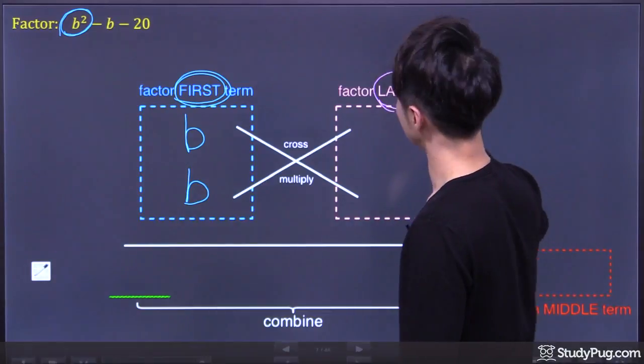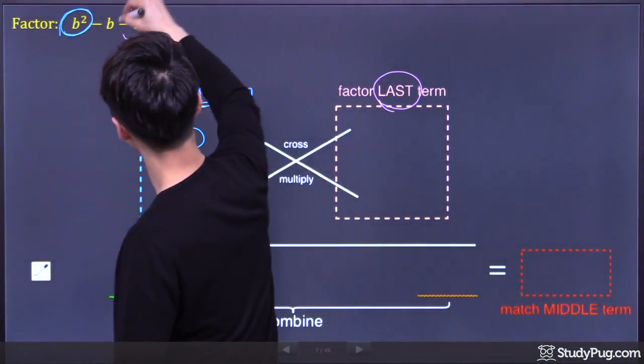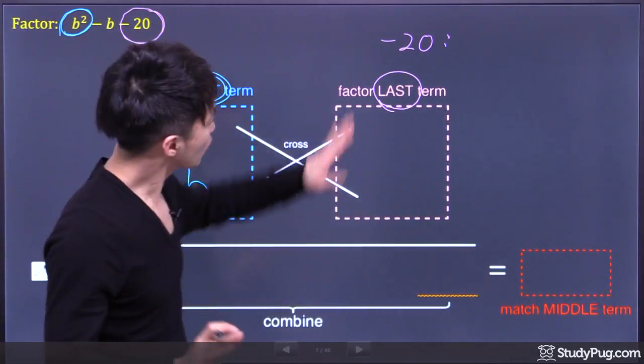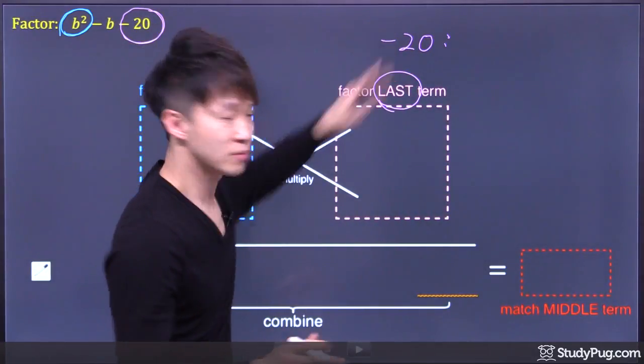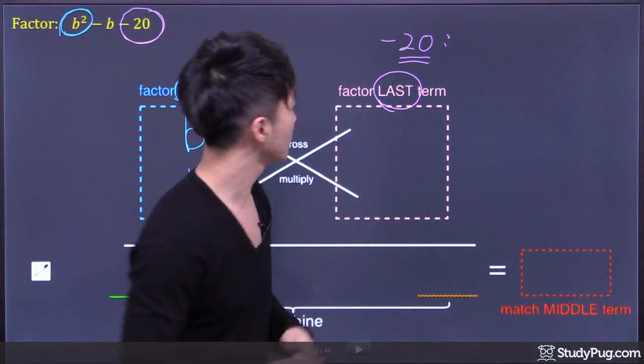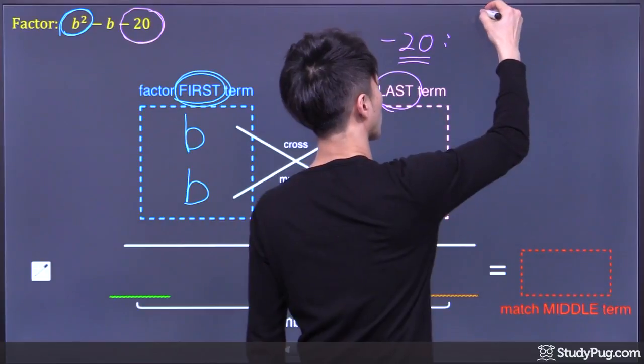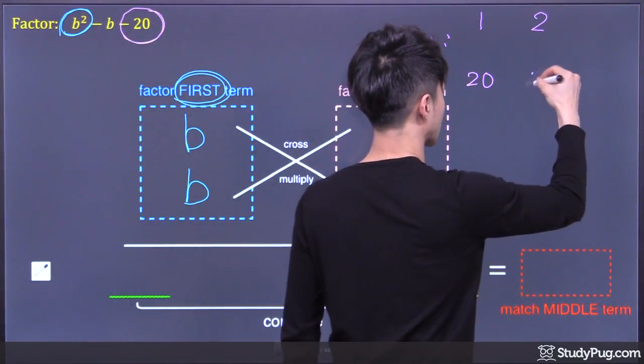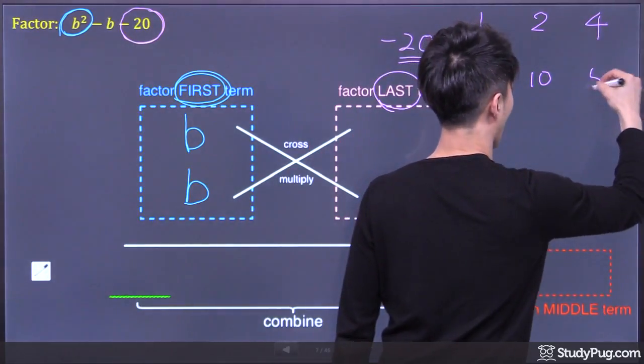Next, factor the last term. The last term here we have negative 20. Let's not worry about the negative sign for now. Focus on the number 20. Who are the factors of 20? Well, 20 divided by 1, we get 20. 20 divided by 2, we get 10. 20 divided by 4, we get 5.